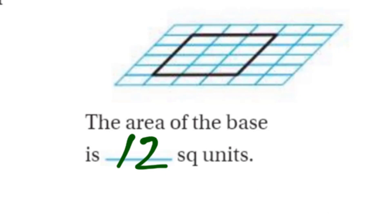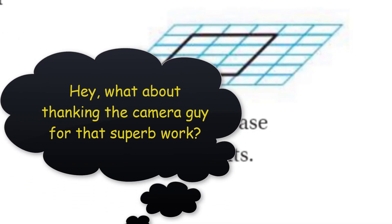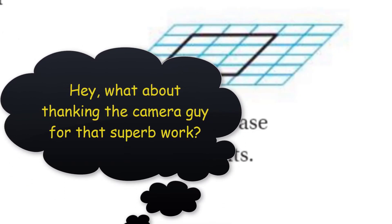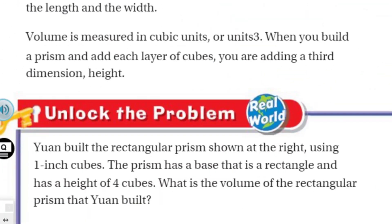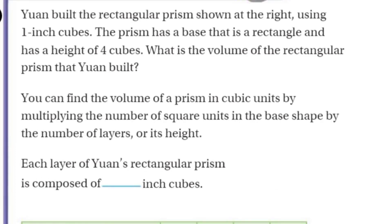We're going to find that out right now. We can't do any of that unless we unlock the problem. That's right, my friends, because it's real world, baby! Real world. The real world problem is that Yuan built the rectangular prism shown at the right using 1-inch cubes.